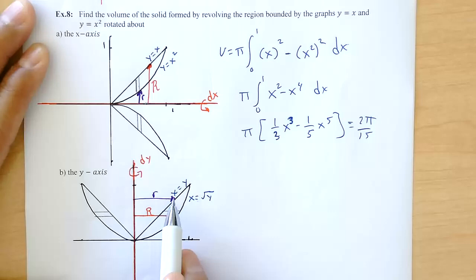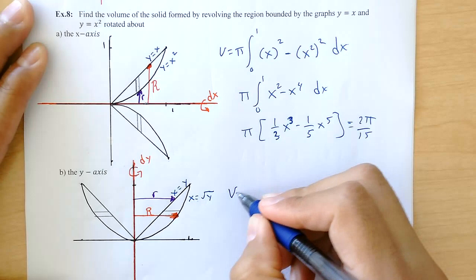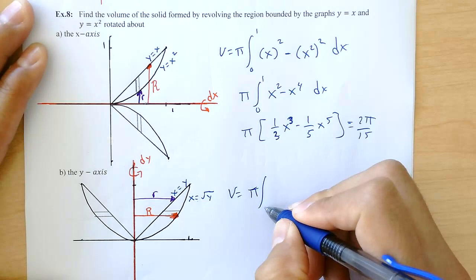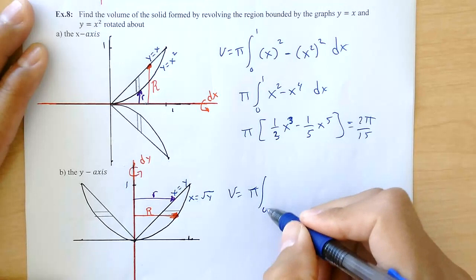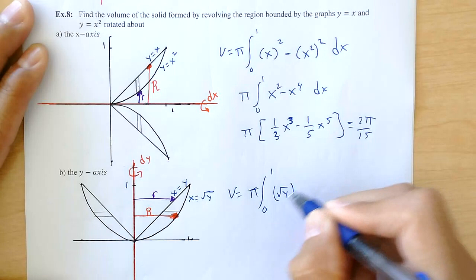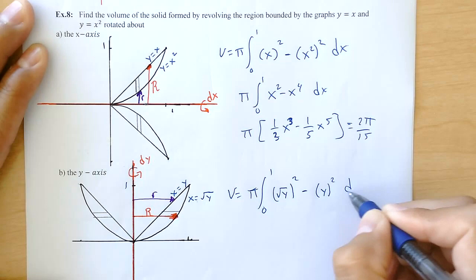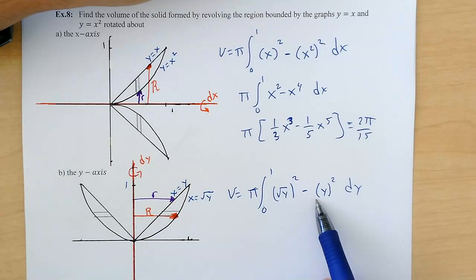And when I set up that equation, volume is equal to pi, integral, the limits are in terms of y so look at the limits of y, zero to one. The big radius second power minus little radius second power in terms of y. Big R minus little R, everything in terms of y.